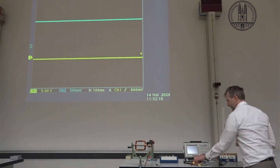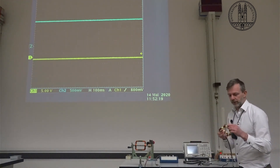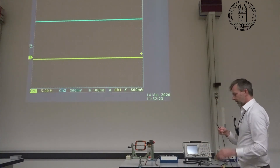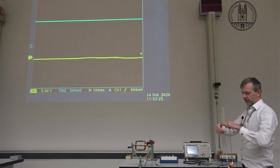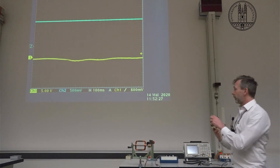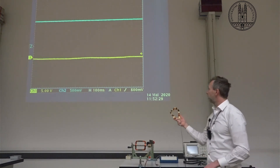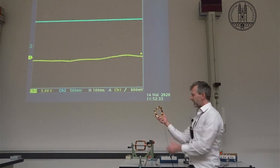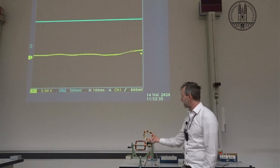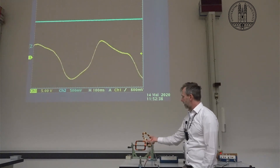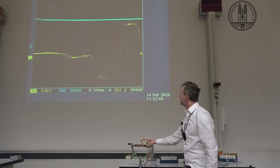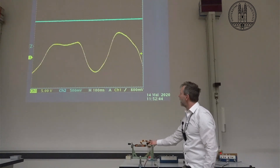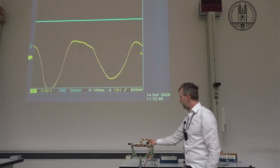I can take this coil here, which has many loops — possibly a thousand loops — and put this one on. This one is going to produce such a large magnetic flux through so many loops that all I need to do is change the area by squeezing it. And just by squeezing this loop, we see that we can generate a lot of EMF.